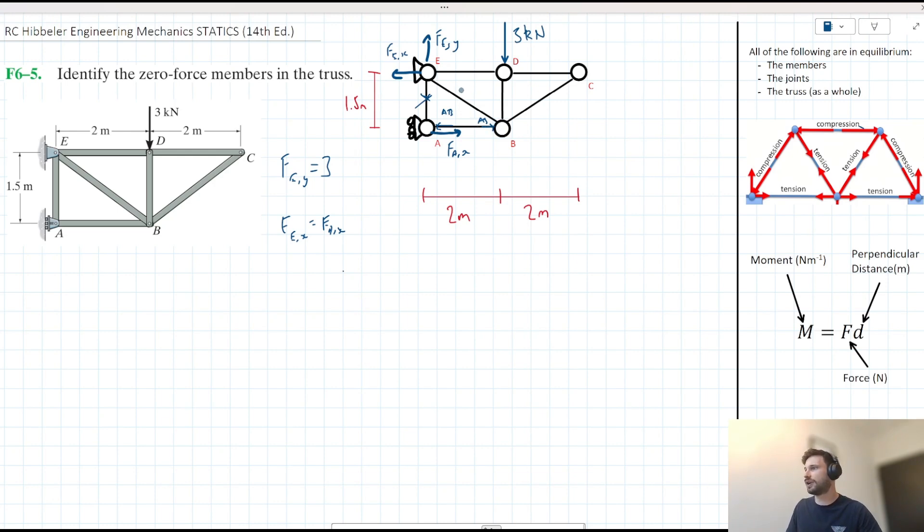Let's have a look at joint E. So we know that FE,Y, which has a magnitude of 3, is acting up. The only thing acting down that could counter that would be the vertical component of BE here. So we have BE acting down and to the right and up and to the left at joint B.